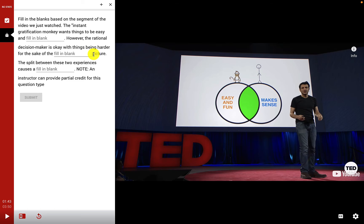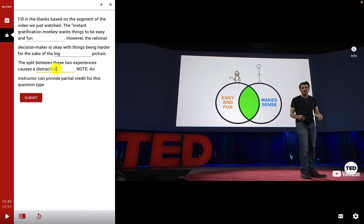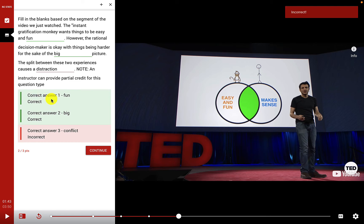This is an example of a fill in the blank question, which can be based on the video segment just watched or connect to something from another class. The blanks reference: the instant gratification monkey wants things to be easy and fun, while the rational decision maker is okay with things being harder for the sake of the big picture. For the third blank I type 'distraction.' Instructors can provide partial credit — I received two of three possible points.